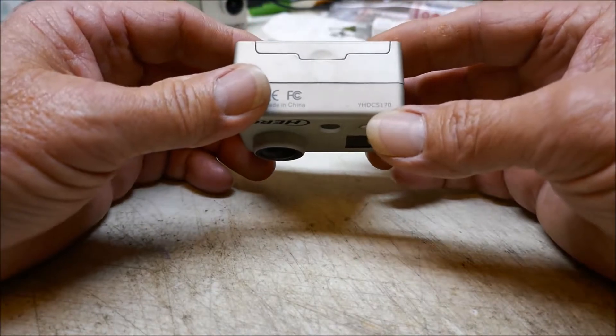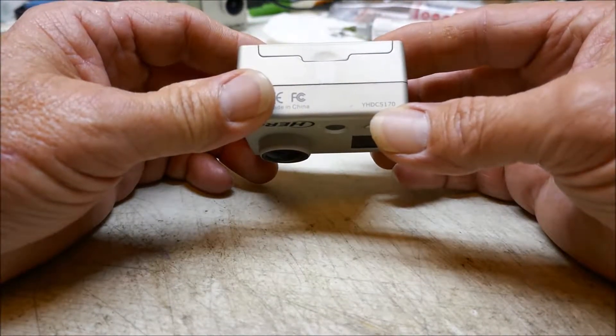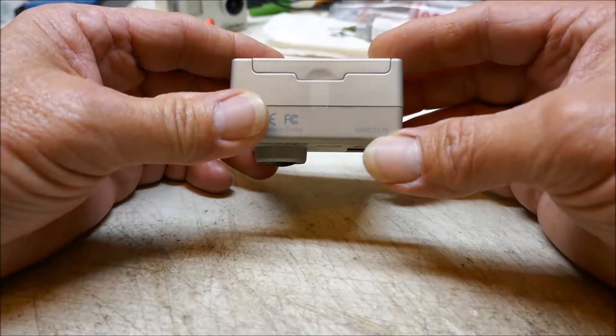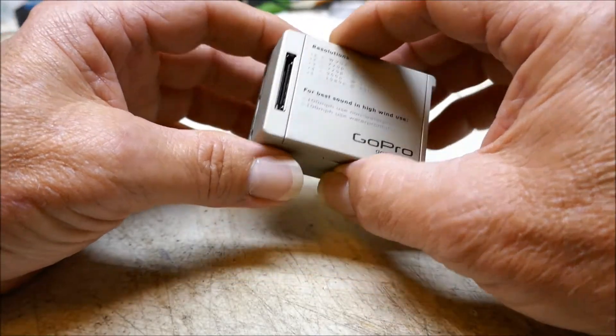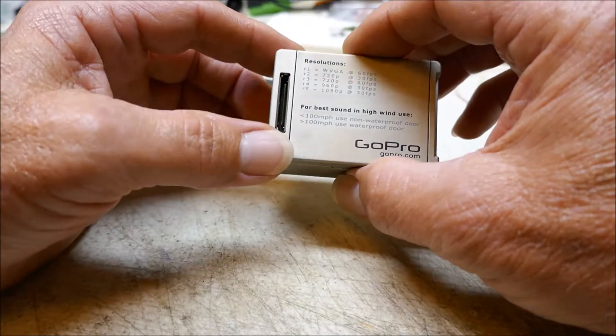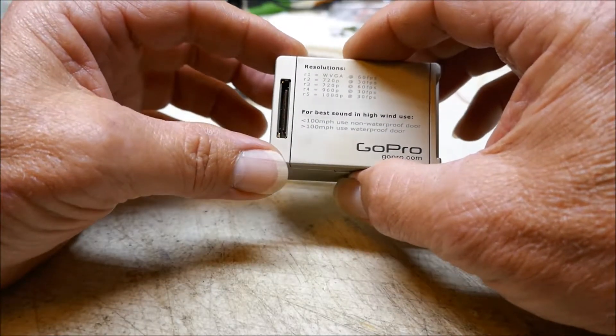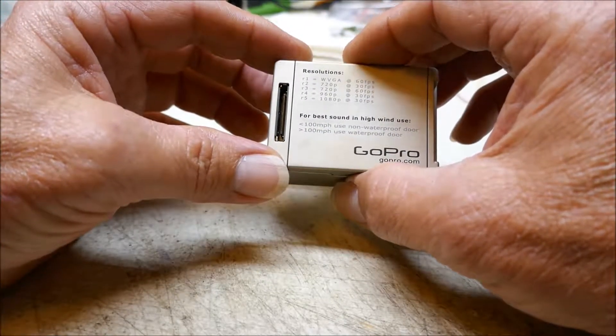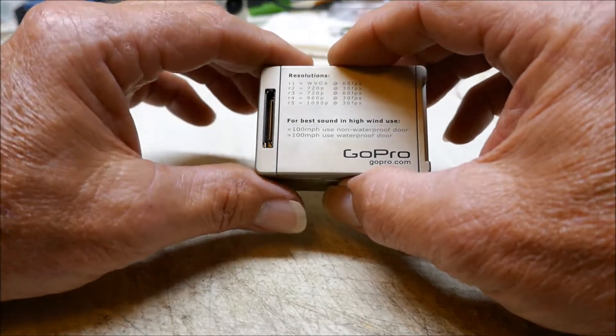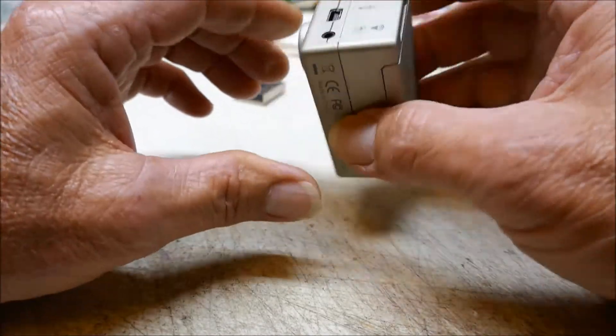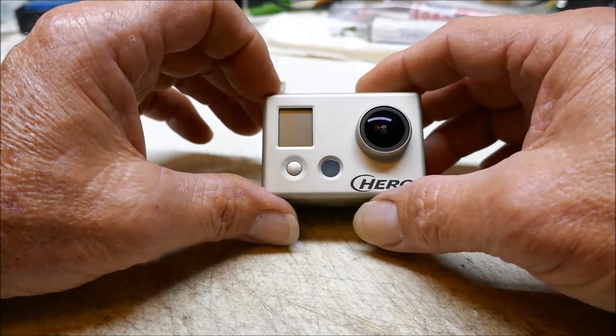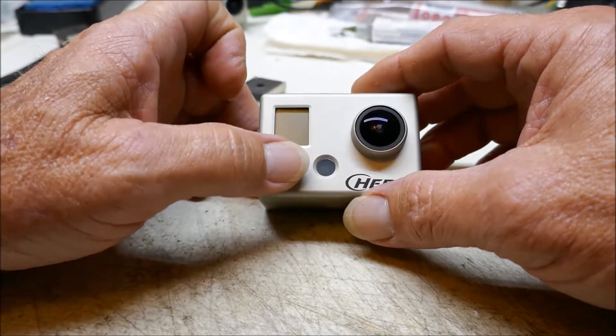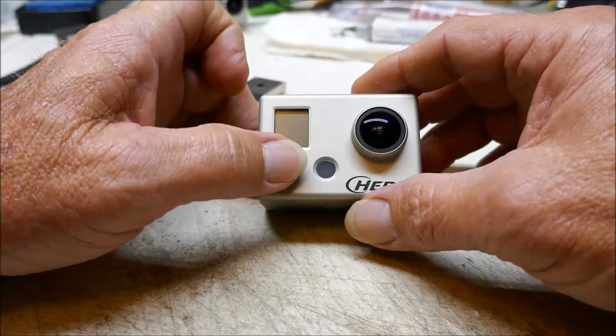This is GoPro Hero model YHDC 5170. The only thing we have to hack into the camera for is our external microphone and external battery power. We will be setting the camera for one-button mode operation, which means that as soon as you press the power mode button, the camera will power up and it will start taking photos, time-lapse, or video, whichever you have it set for.